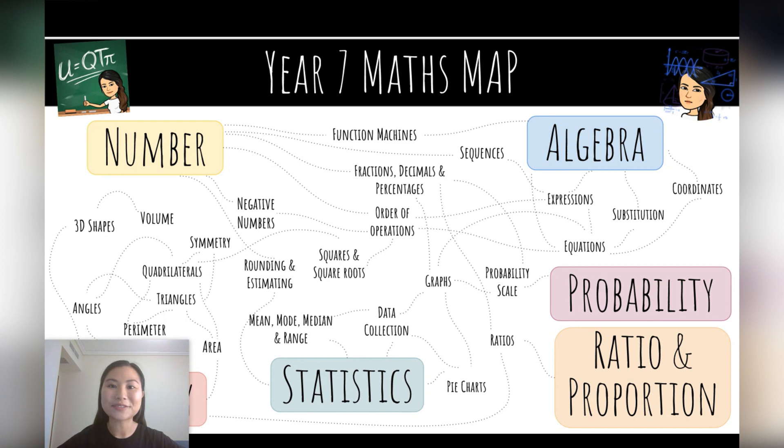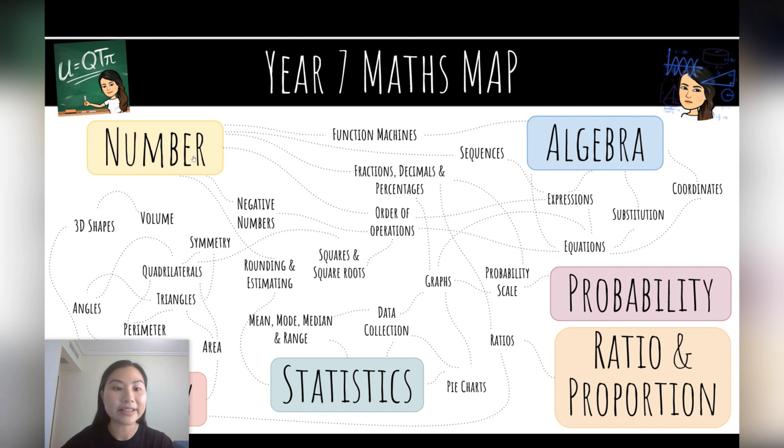Today we're going to be creating an interactive subject map using Google Slides. The idea is to show the interconnectedness of the concepts and subtopics within the subject. So here I've got a subject map for Year 7 Maths and you can see I've got six topics here with a bunch of concepts that are all related to each other. So when students come and they click on a topic, for example they click on number, they'll be able to access some additional information about the topic and resources.